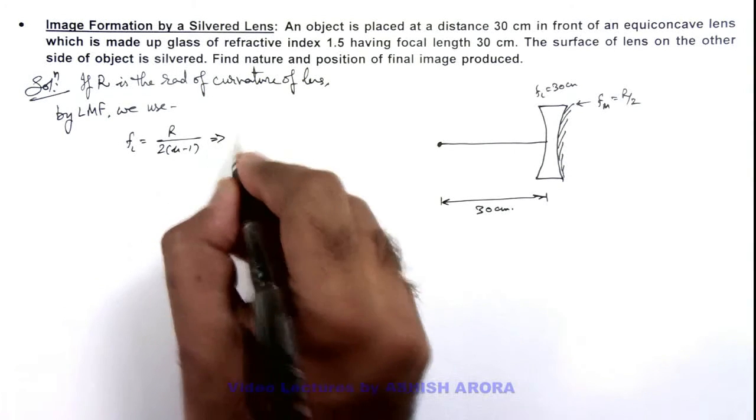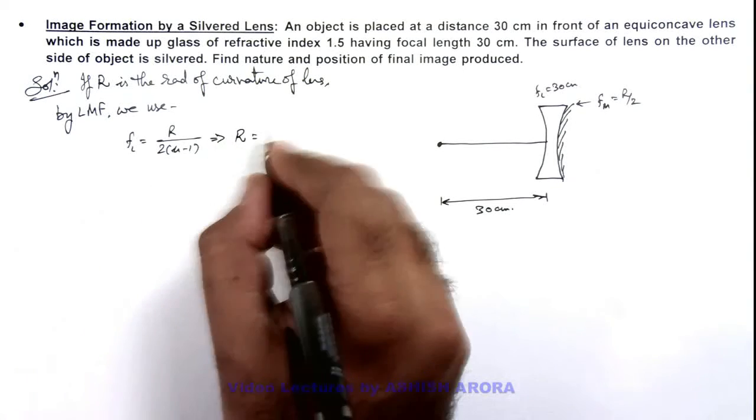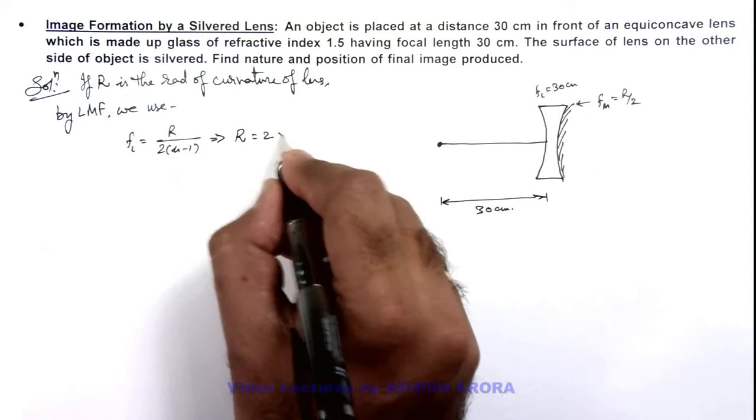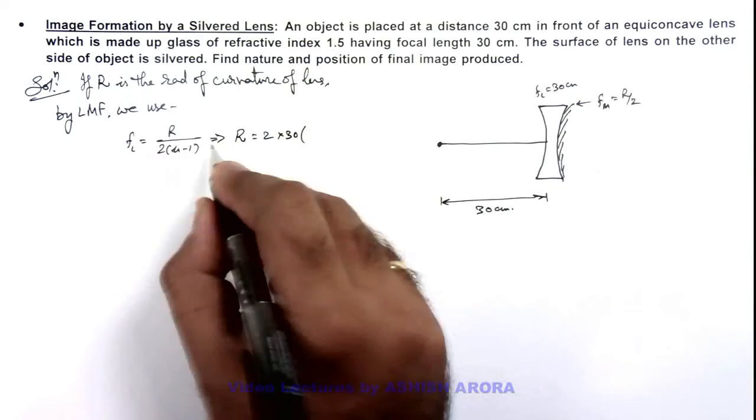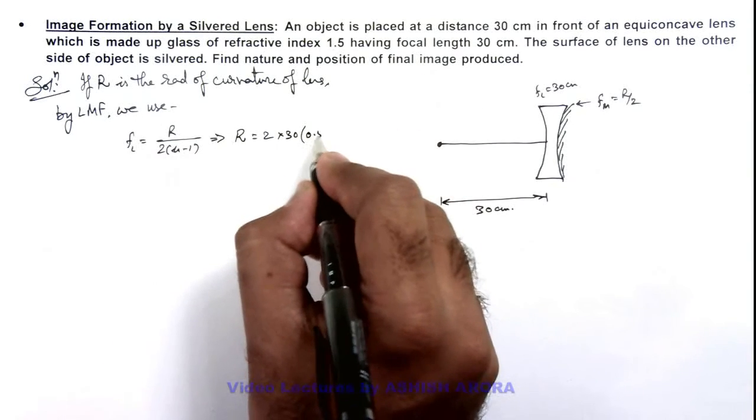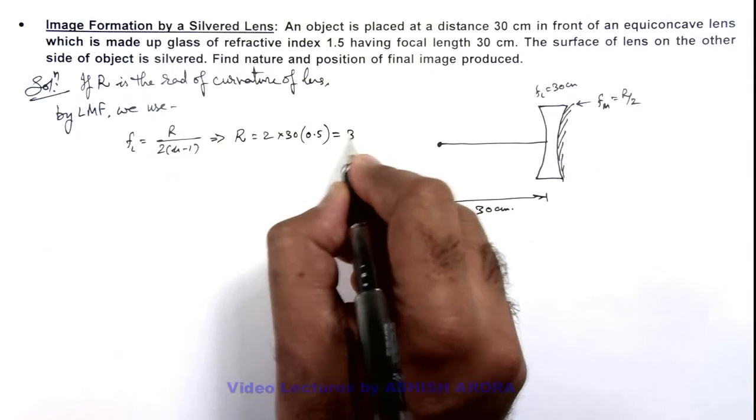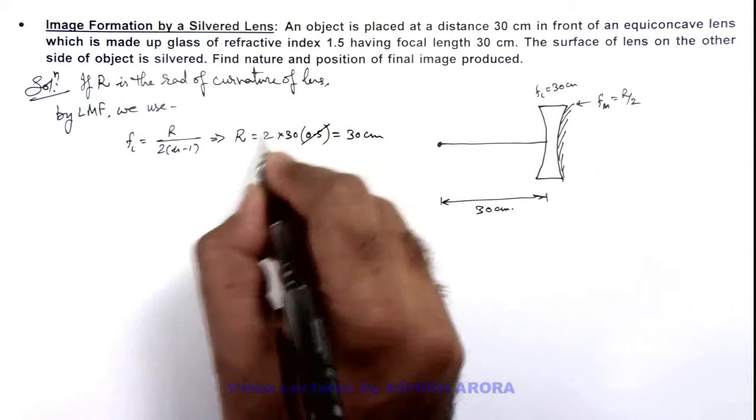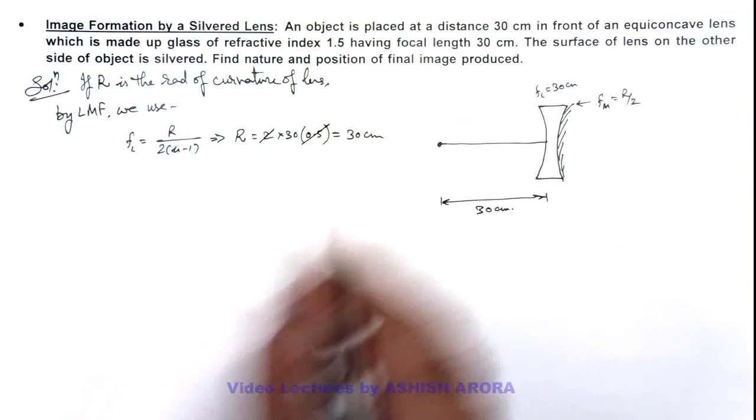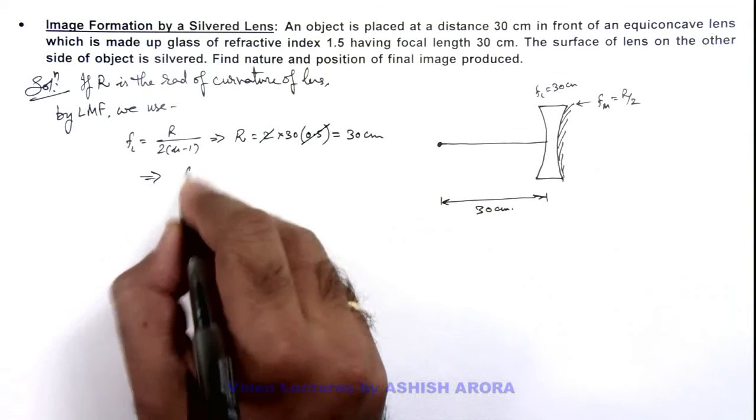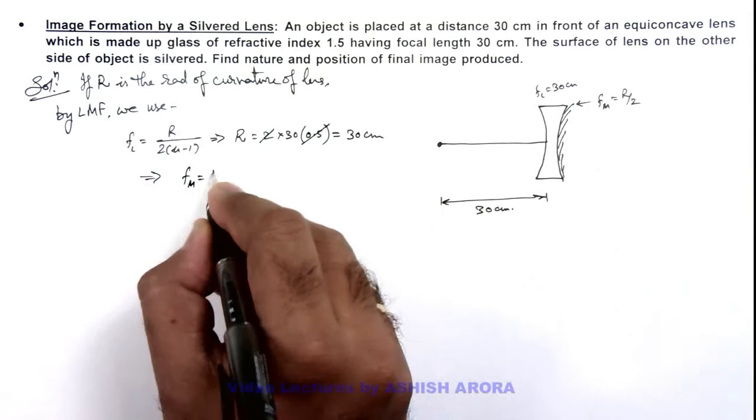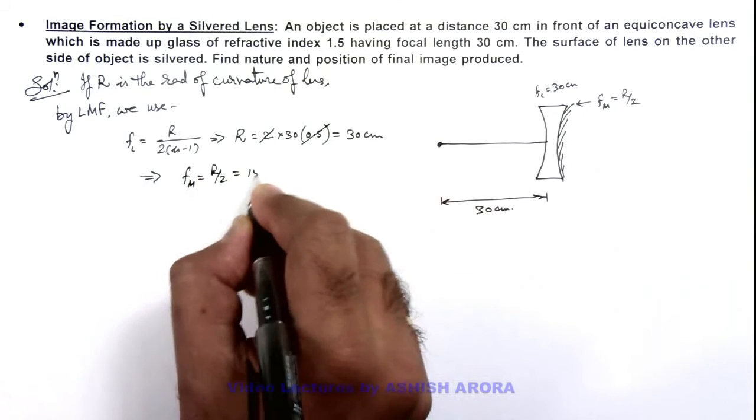So this implies the value of radius of curvature is twice the focal length which is 30 multiplied by mu minus 1 which is 0.5, so this is coming out to be 30 centimeter. So if radius of curvature is 30 centimeter, this implies the focal length of mirror we can write as r by 2, that is 15 centimeter.